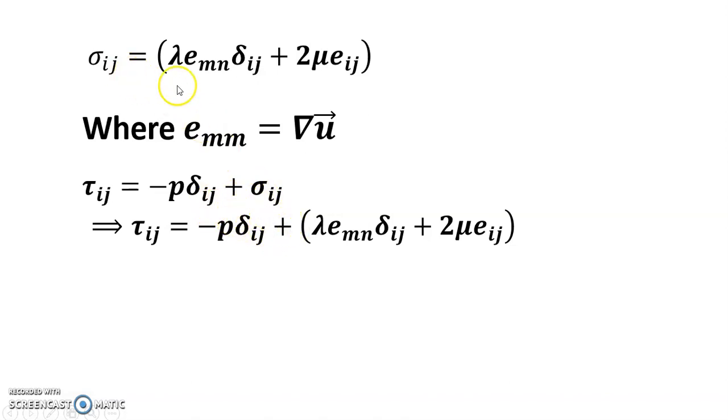Putting the value of sigma_ij in here, I get this value. And since the summation of delta_ij equals 3, I can write p equals tau_ij divided by 3 minus 2 by 3 mu plus lambda times e_mn.